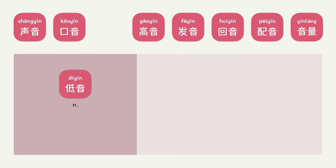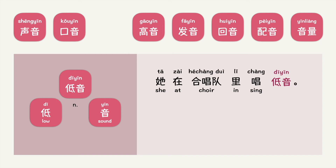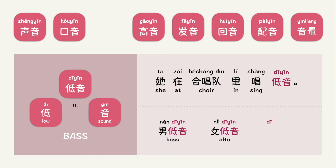低音. 低音 is also a noun. 低 means low, 音 is sound. 低音 means bass. To expand on this: 男低音 is a bass, 女低音 is an alto, and 低音提琴 refers to a double bass.